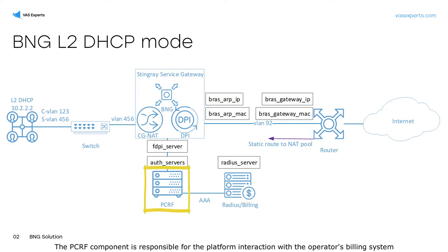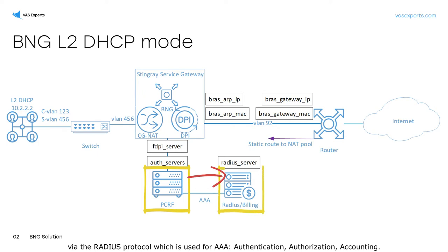The PCRF component is responsible for the platform interaction with the operator's billing system via the RADIUS protocol, which is used for AAA: Authentication, Authorization, Accounting.